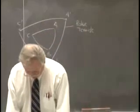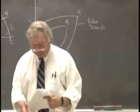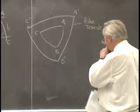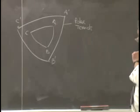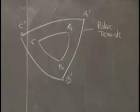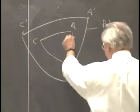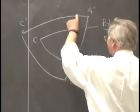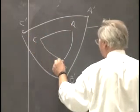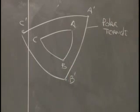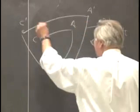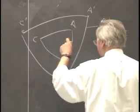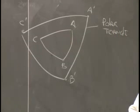The polar triangle has some useful properties. A property of the polar triangle is that the two triangles A, B, C and A prime, B prime, C prime are mutually polar. That is, if I use the spherical triangle ABC to define the three points A prime, B prime, C prime, then if I reverse the process and find the pole of arc A prime, C prime, that turns out to be point B. The polar triangle of the polar triangle is the triangle that we started with.